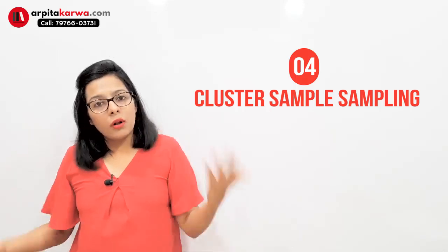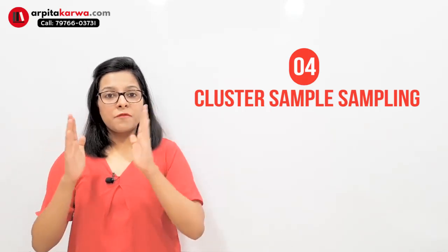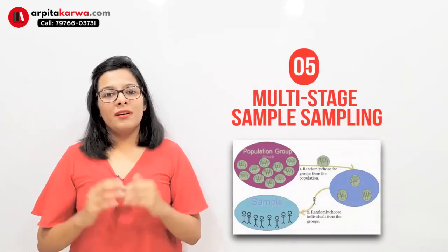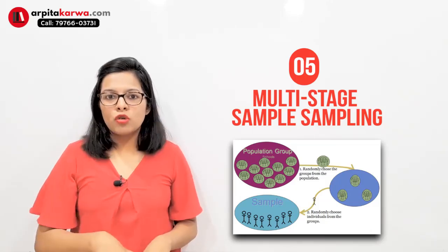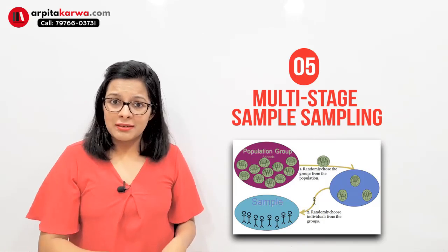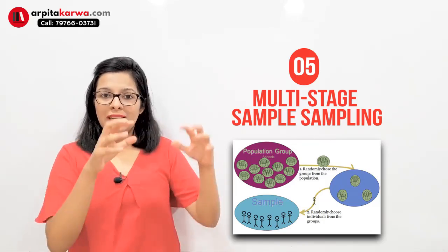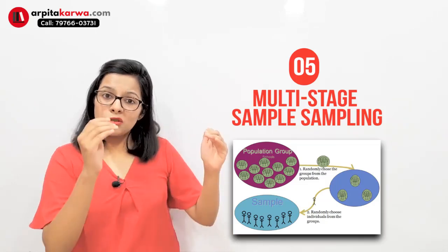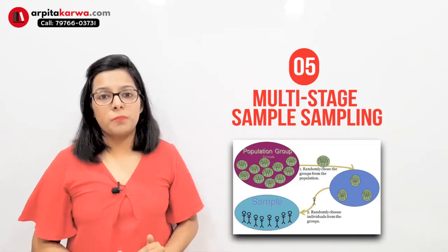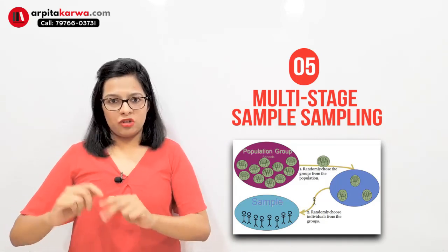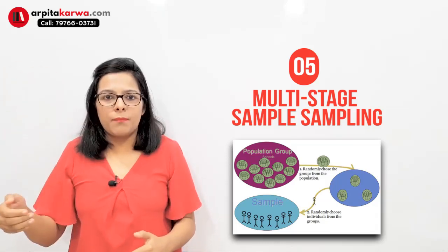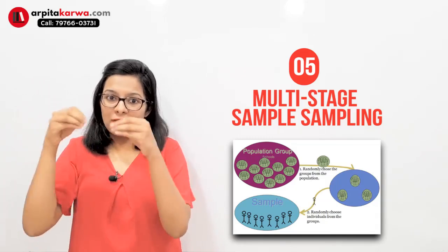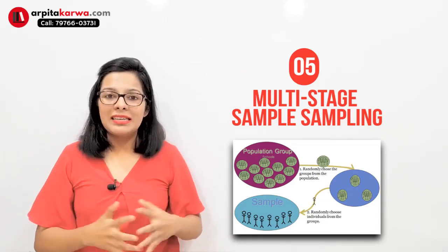The fifth type is multi-stage random sampling. Multi-stage sampling is when I randomly choose clusters and then from those clusters I randomly choose students. So I first randomly selected schools, and within those schools I again randomly picked students. This involves two stages: first I do cluster sampling, and then within the cluster I again do sampling by choosing a few students. That is why it is known as multi-stage sampling.